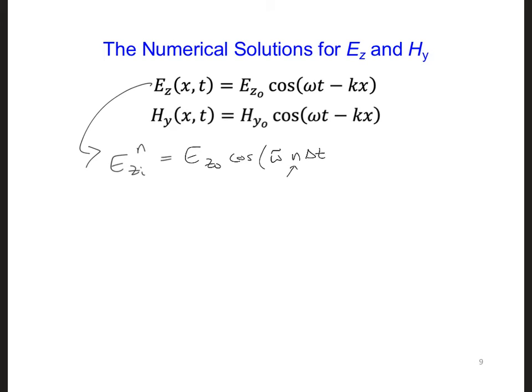For T, I'm going to put in N times delta T. N is the number of time steps. If you multiply that times the length of each time step, this together will give you a value in seconds corresponding to T, minus K tilde I delta X, which corresponds to the distance in X. It would be in meters.